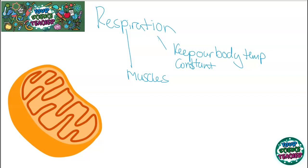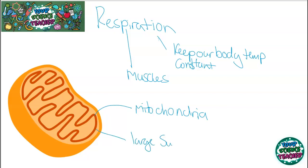Whatever the function of respiration, respiration always occurs in the mitochondria, and a mitochondria is a specific organelle found in both plants and animals alike. The amount of mitochondria found in a specialised cell will often tell you the role of it — whether it requires lots of energy, like muscle cells or sperm cells, or whether it doesn't require so much energy, like xylem or skin cells. Mitochondria is perfectly adapted for its role; it has a large surface area for enzymes that need to surround it in order for these reactions to take place.